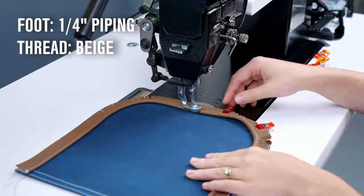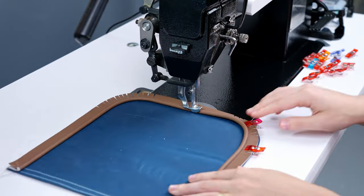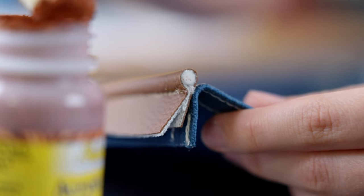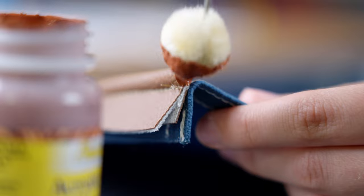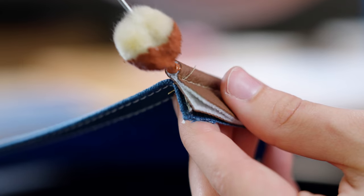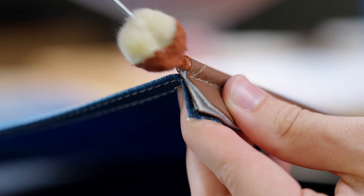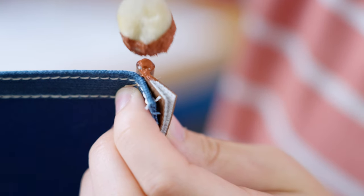Then we will sew the piping onto the side panels. At this point, we're going to add some acrylic dye to the ends of the exposed piping to hide the end. It might take several layers to achieve the look you want. We're going to let those pieces dry as we continue to work.